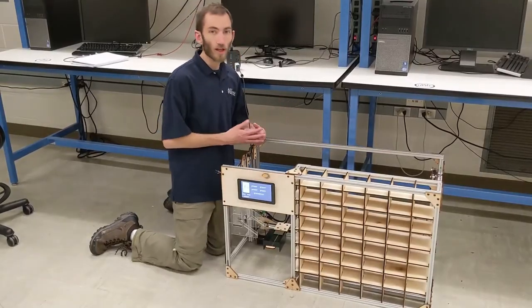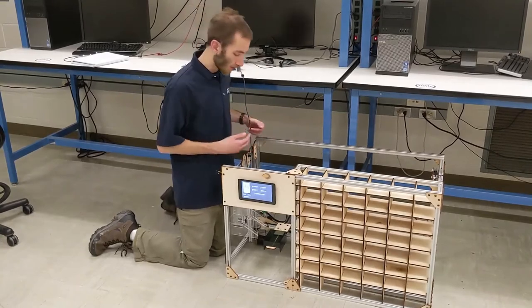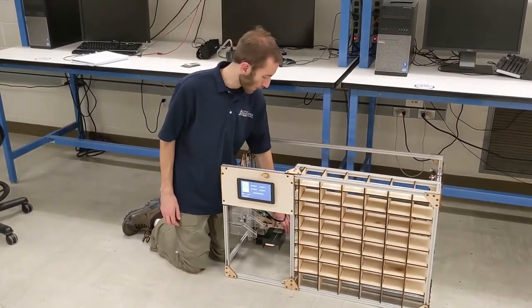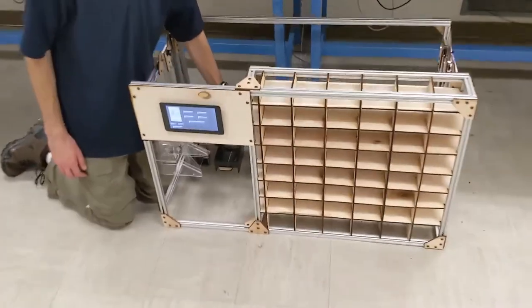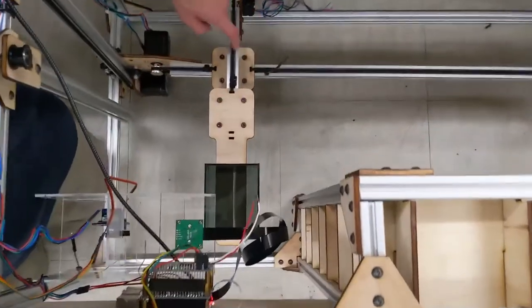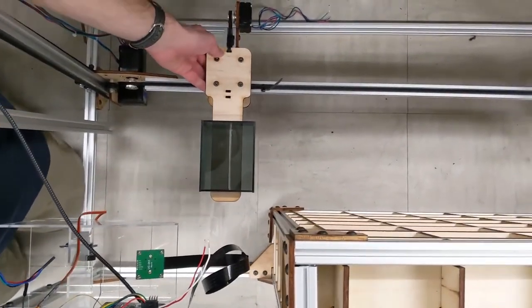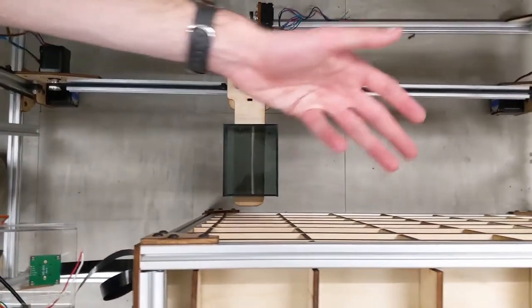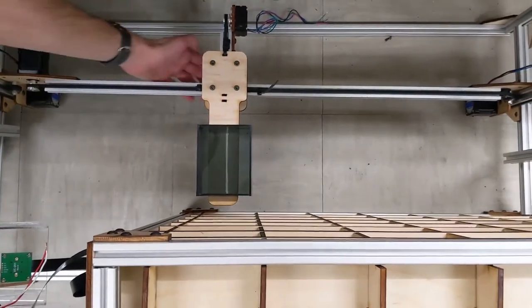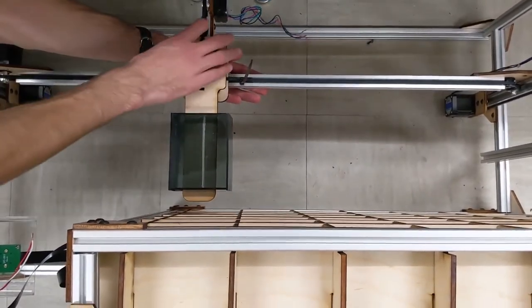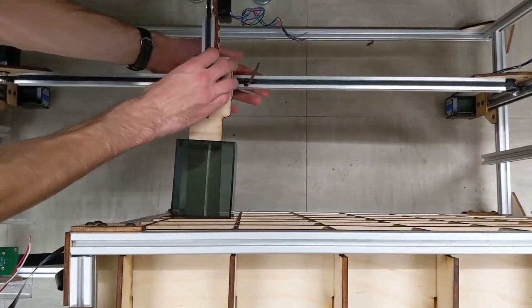Once the cards have been classified by the OCR and stored in the bins, the bins are then able to be pulled back by this little manipulator. Then we have a motor here attached to the timing belt, which then pulls it back and is able to be slid over to the shelf over here. This is then able to be raised and lowered accordingly in order to store the bin on the shelf.